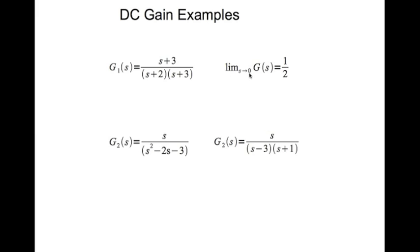Now if you look at this second function, if you factorize it, it ends up being s divided by (s minus 3)(s plus 1). One pole is at s equals minus one — that is stable. The other pole is at s equals three, which is in the right half plane, meaning this pole has a positive real part and the system is unstable. Therefore you cannot take the DC gain; DC gain doesn't make sense for an unstable system.